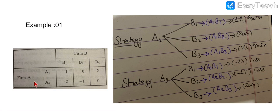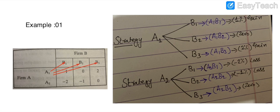Let's understand this. When Firm A plays strategy A1, Firm B can play strategies B1, B2, or B3. So the combinations we obtain are: A1-B1, A1-B2, and A1-B3.